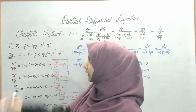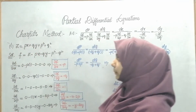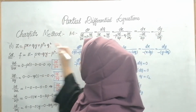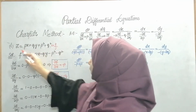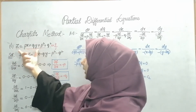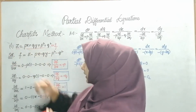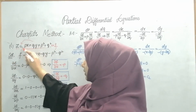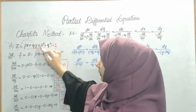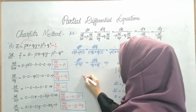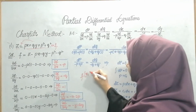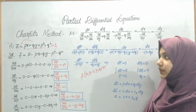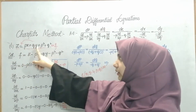Let's see one example. Suppose the question given is: z = px + qy + p² + q², and it is asked to solve using Chapit's method. We let this equal f. Since z and the other terms are on two different sides, we bring everything to one side: f = z - px - qy - p² - q² = 0. This matches the required form f(x, y, z, p, q) = 0.